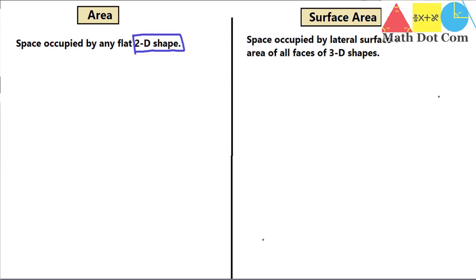Surface area is basically the space occupied by the lateral surface plus the area of all faces of a 3D shape. One very important thing to differentiate area from surface area: you find the area of a 2D shape, and the surface area of a 3D shape. This is the basic difference. I will give examples of 2D and 3D shapes to help you differentiate further.